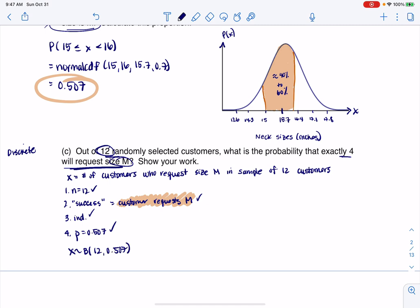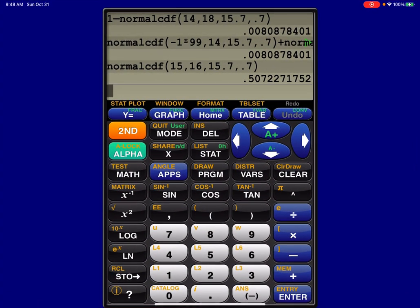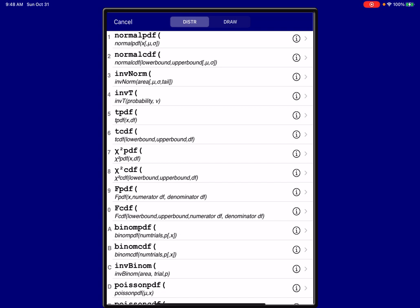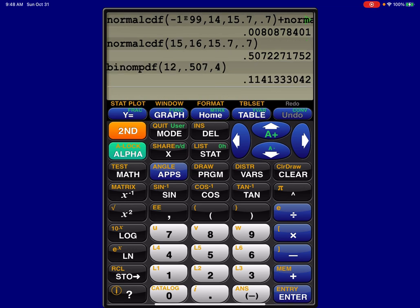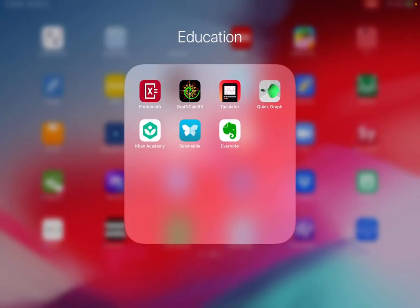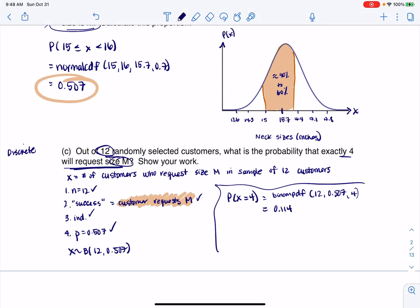And that just allows me to use some calculator commands. So if I want this probability that I have exactly 4, that's the equal sign. So I want the probability that X equals 4, that the number of customers who request a medium in this sample of 12 is exactly 4. And I have a calculator command for that. We have binomial PDF. So I'm going to go ahead and do 12, 0.507 and then 4, and let's see what that number is. So again, I'm going to head to my calculator, and these commands are the same whether you're on the app or the physical calculator. So I've got to go down to binomial PDF this time, and we're going to do 12, 0.507, and then we want 4 successes out of those 12 trials. So we have about a 0.114 or an 11% probability. And that's my answer. All right. Thanks so much, everyone.